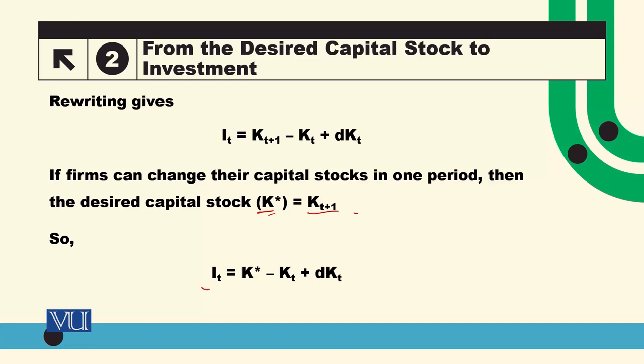So the expression becomes: IT equals K-star minus KT, plus DKT. K-star is the desired level of capital stock which we want to achieve during the year. KT is the capital stock at the beginning of period T. So K-star minus KT is the net change in capital stock, plus DKT, which is the total amount of depreciation of the capital.